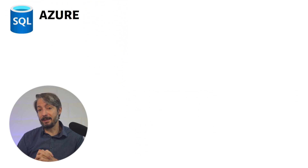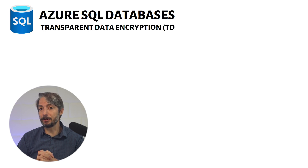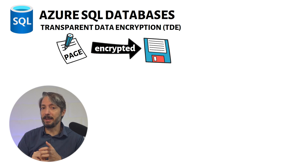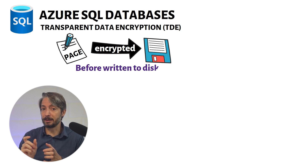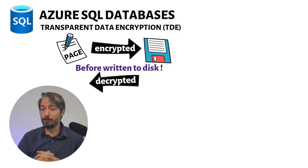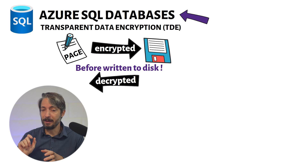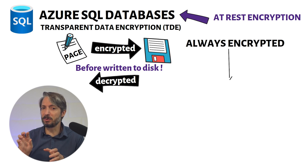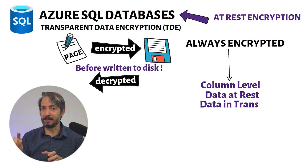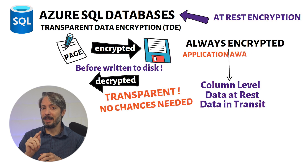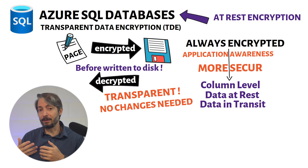Azure SQL databases are encrypted at rest using TDE, transparent data encryption. This is enabled by default and means that encryption of the database is done at page level. Pages in an encrypted database are encrypted before they're written to disk, and subsequently decrypted when they are read into memory. TDE is more of a general approach for all database files on disk, at rest. While the other technology called Always Encrypted is a more granular approach — it protects SQL data at column level, both at rest and in transit. TDE is transparent and requires no application awareness. Always Encrypted does require application awareness and potentially code changes, but offers an additional security layer.